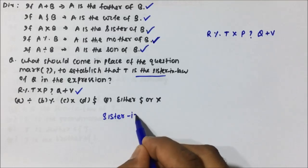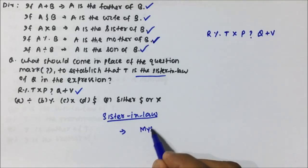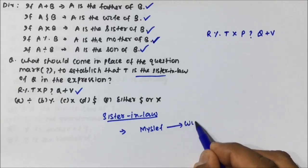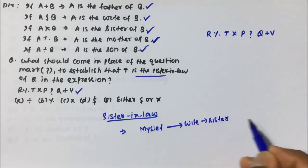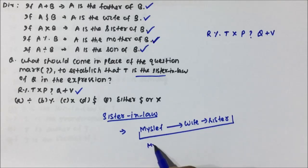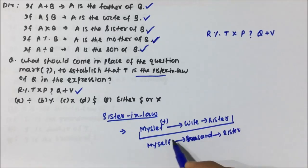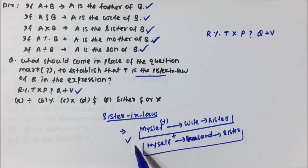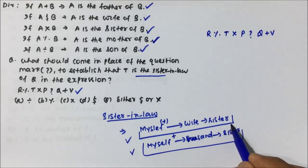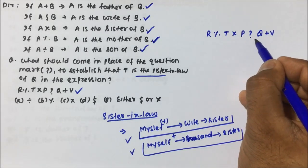First, let's understand when the sister-in-law relation will come. Sister-in-law comes in two ways: your wife's sister will be your sister-in-law, or if you are female, your husband's sister will be your sister-in-law. So there are two cases — my wife's sister is my sister-in-law, or my husband's sister is my sister-in-law.